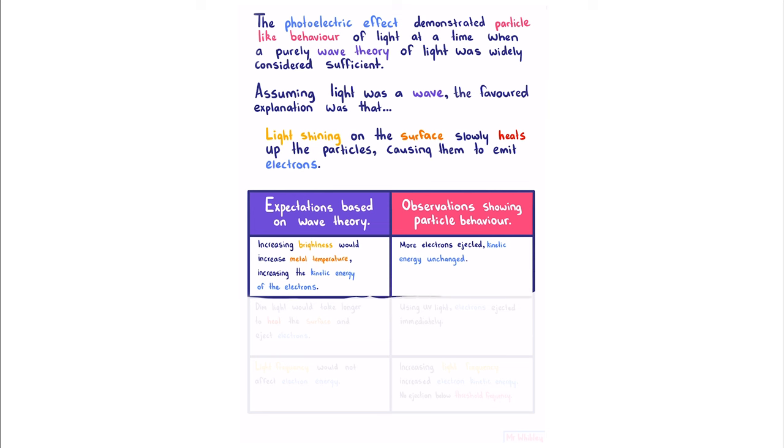Based on the wave theory, we would expect that dim light would take longer to heat the surface and eject electrons. In reality, using UV light, electrons were ejected immediately.